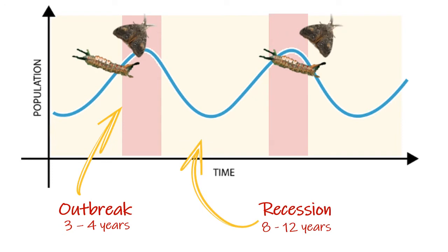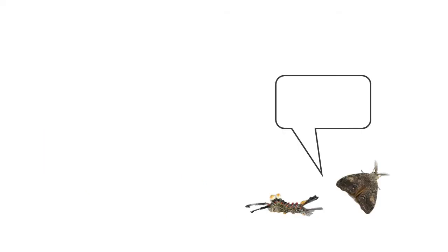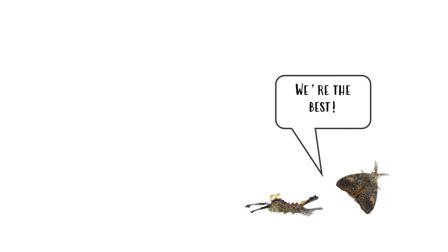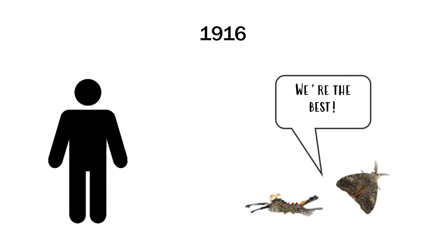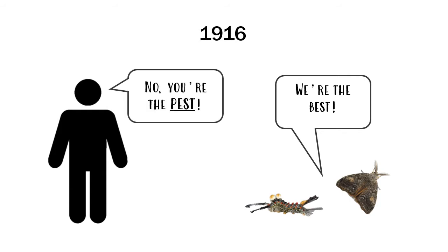They were first described defoliating Douglas fir trees at the southern edge of interior BC in 1916. They were probably defoliating trees long before then, but it took until 1916 for someone to write about it in detail.